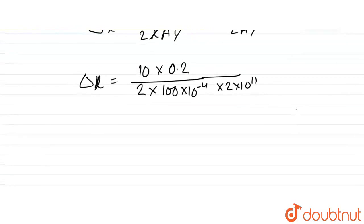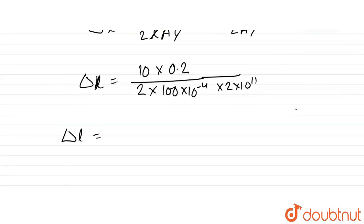The change in length delta l equals 10×0.2 divided by 2×100×10^-4×2×10^11. Simplifying: 2 in numerator and denominator cancel, giving 10^(11+2-4) = 10^9 in the denominator. This equals 5×10^-10 meters, which is the total change in length.